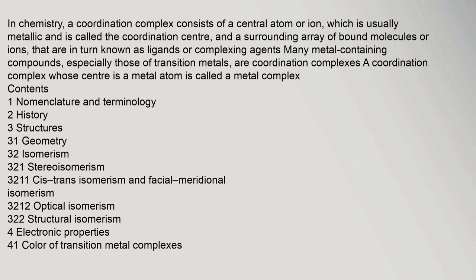In chemistry, a coordination complex consists of a central atom or ion, which is usually metallic and is called the coordination center, and a surrounding array of bound molecules or ions that are known as ligands or complexing agents. Many metal-containing compounds, especially those of transition metals, are coordination complexes. A coordination complex whose center is a metal atom is called a metal complex.